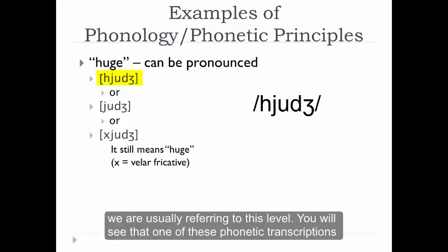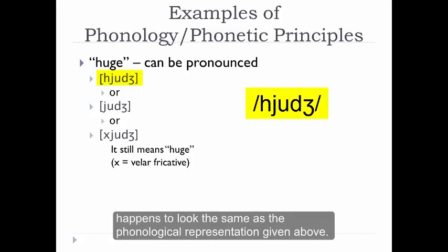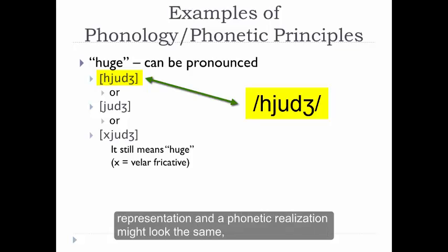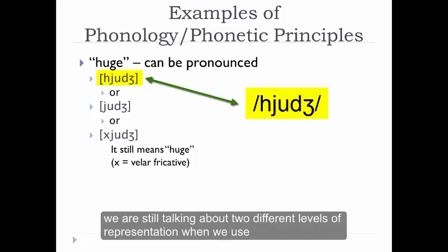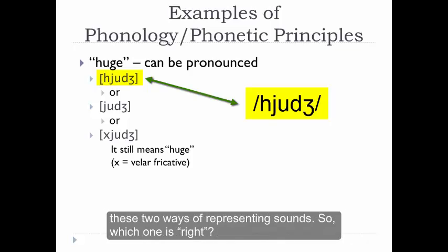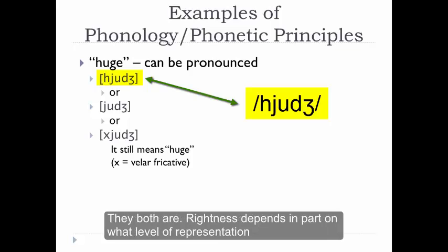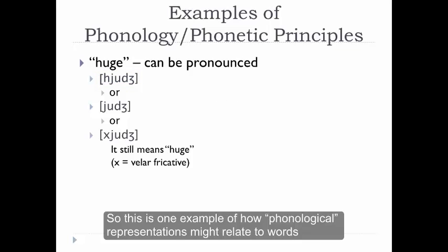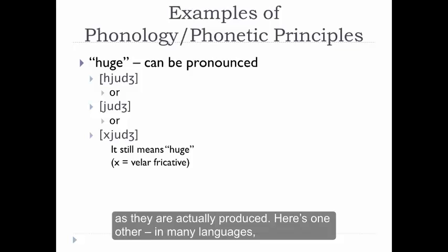You'll see that one of these phonetic transcriptions happens to look the same as the phonological representation given above. This often happens, and it's important to remember that even though a phonological representation and a phonetic realization might look the same, we're still talking about two different levels of representation. So which one is right? They both are — rightness depends in part on what level of representation you're looking at. This is one example of how phonological representations might relate to words as they're actually produced.